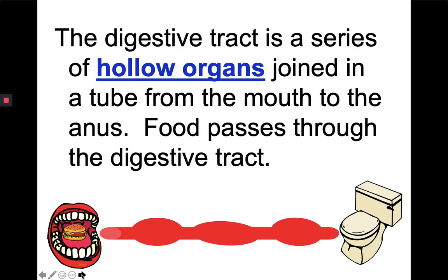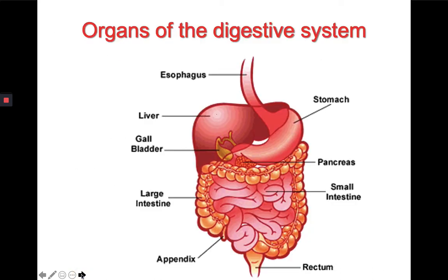The digestive tract is a series of hollow organs joined in a tube from the mouth to the anus. Food passes through the digestive tract. Here's another picture of the organs — as you can see we start with the esophagus,